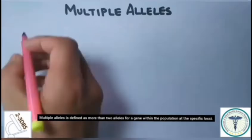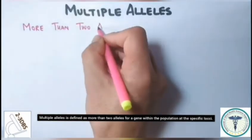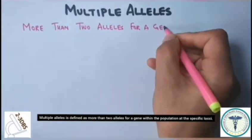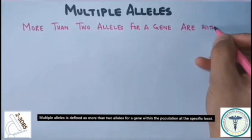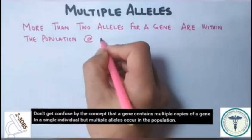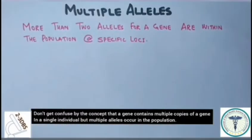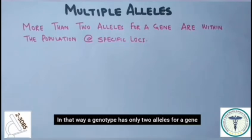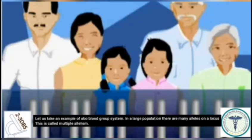Multiple alleles is defined as more than two alleles for a gene within the population at a specific loci. Don't get confused — multiple alleles occur in the population, not in a single individual. In that way, a genotype has only two alleles for a gene. In a large population, there are many alleles on a locus. This is called multiple allelism.